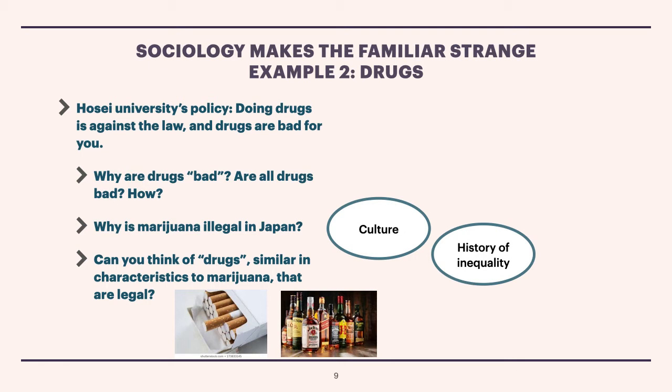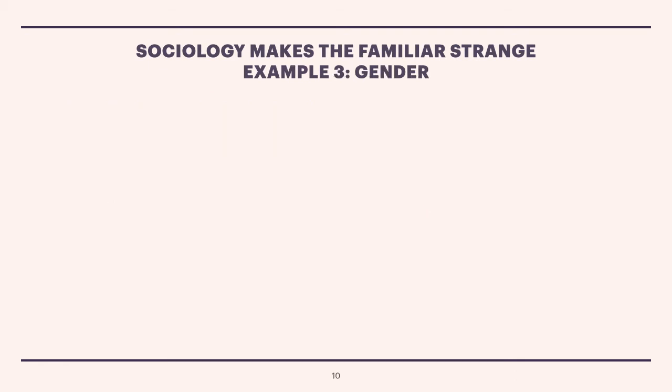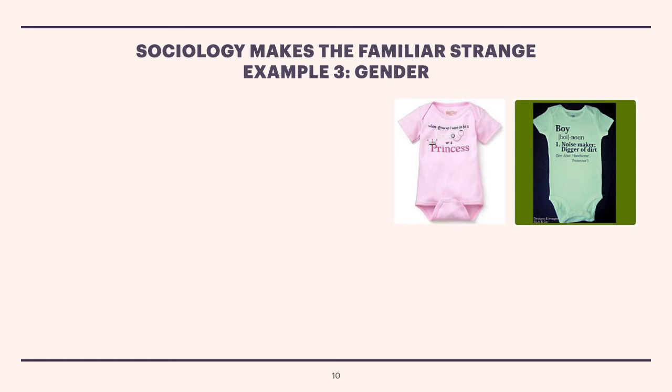Now, let us get to a third example — our last example — which is gender. You must have seen something like this: baby clothes. The pink one is for the princess, of course — that's for girls. And the blue one is for boys. Common. And the question is, has it always been like that? Pink for girls and blue for boys? Let me show you a study in the United States. In 1918, at the turn of the century, this researcher found that in department stores, the generally accepted rule is pink for the boys and blue for the girls.